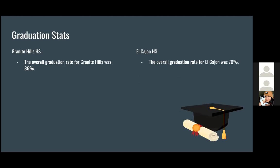Looking at graduation statistics between both schools, the biggest rate is at Granite Hills High School with 86%, while El Cajon has an overall rate of 70%. This is very surprising because both schools are in the same school district and only two blocks away, so it really brings attention to what's not being provided for students at El Cajon High School that they're not being successful.